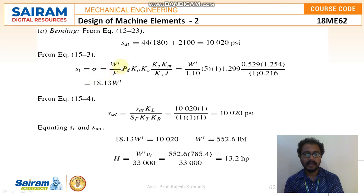Moving to the ST where it is also nothing but the stress, the formula is W by F into PD into KO into KV into KS KM divided by KX into J. So WT is the unknown here and I know the stress value. F is 1.10, PD is 5, KO is 1, KV is 1.299, KS is 0.529, KM is 1.254, KX is 1 and J is 0.216. You can see everything I am substituting in terms of normal PSI and inches. So the stress value I am getting in terms of W is 18.13 WT. That is the tangential force of the wheel.